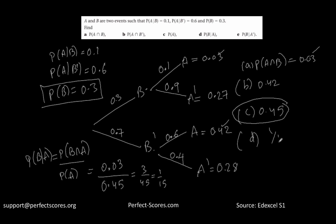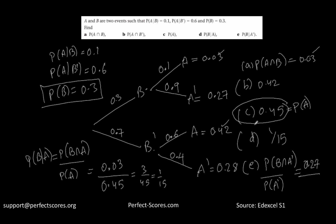So 0.03 divided by 0.45 equals 3 over 45, which simplifies to 1 over 15. Part E asks for the probability of B given that A has not occurred. That equals the probability of B intersection A-not divided by the probability of A-not. The probability of B intersection A-not is 0.27, and the probability of A-not is 1 minus 0.45, which is 0.55. So the answer is 0.27 divided by 0.55.